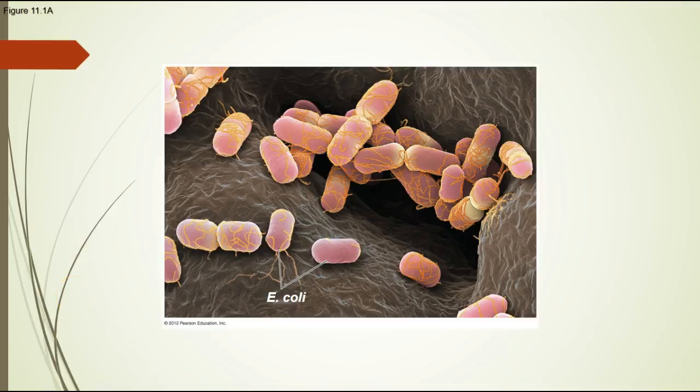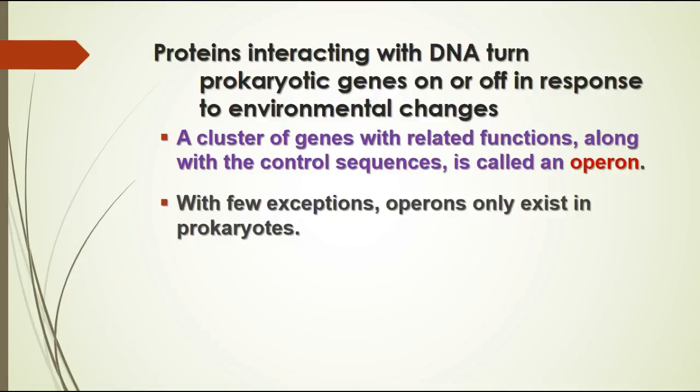You eat different things all the time, so E. coli has to be able to turn genes on and off to make the enzymes it needs for the different things you eat. When you have a cluster of genes that have related functions along with a sequence that controls the gene, this is called an operon.